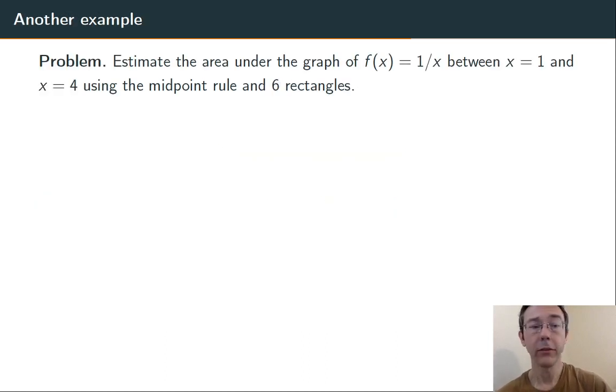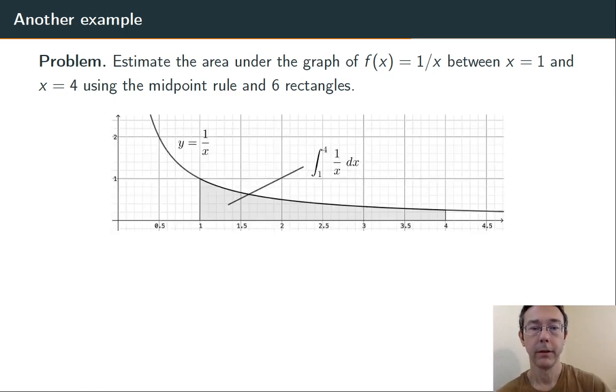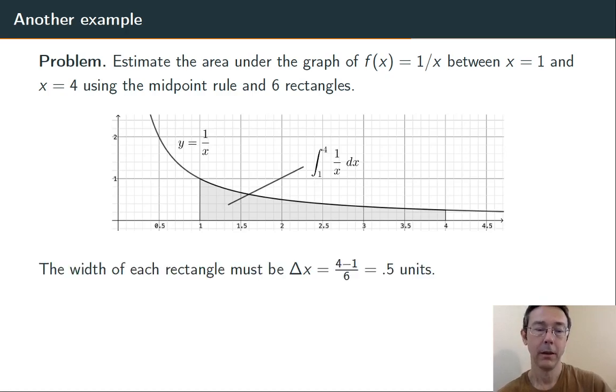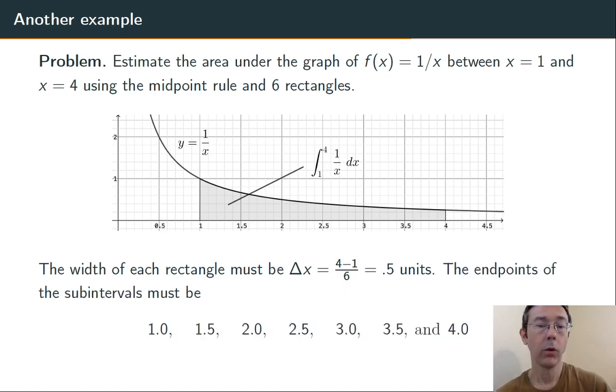Let's do another problem. Estimate the area under the graph of f(x) equals 1 over x between x equals 1 and x equals 4 using the midpoint rule in six rectangles. So here's the region that we're trying to approximate. It's the definite integral from 1 to 4, 1 over x dx. We want to use six rectangles. So we have a total width of 4 minus 1 or 3 that we're dividing into six pieces. So they each have to be half a unit wide. So our intervals are going to go from 1 to 1.5, 1.5 to 2, 2.5 to 3, and so on.